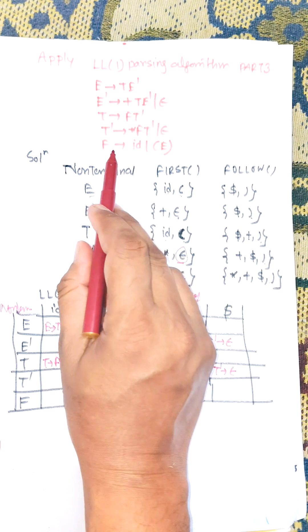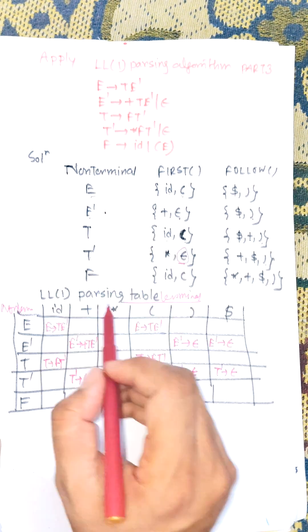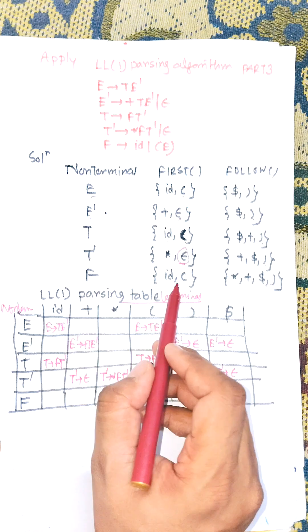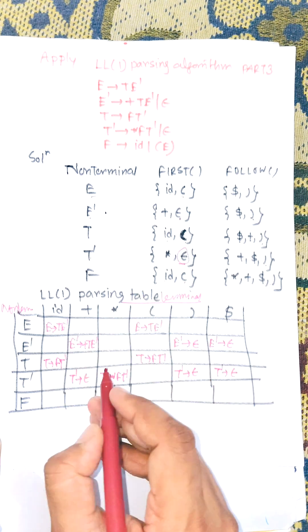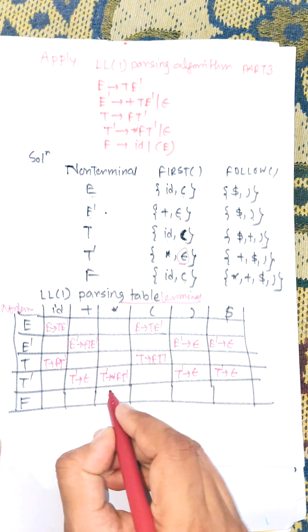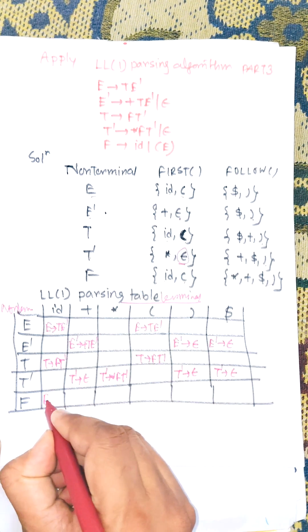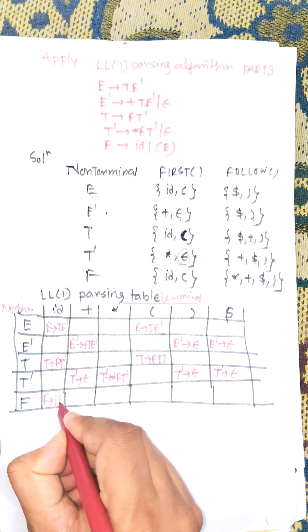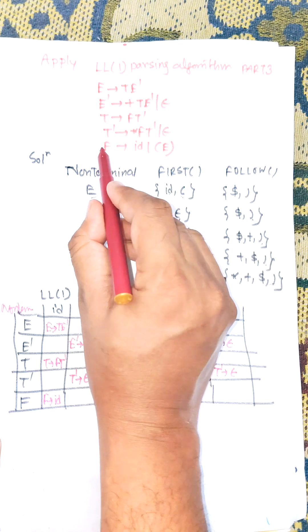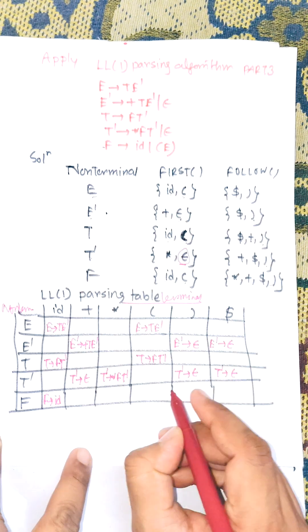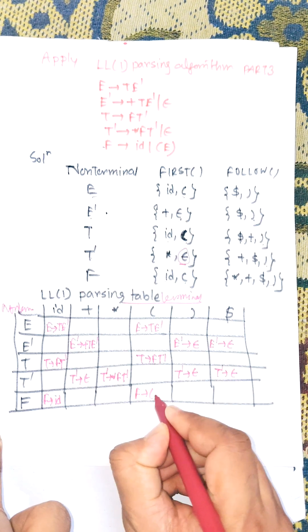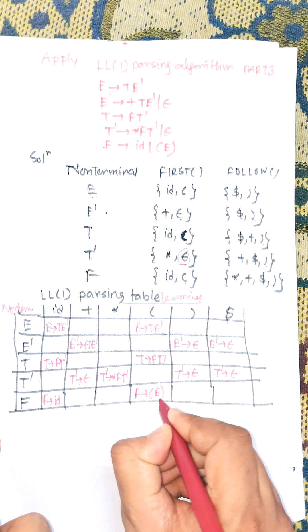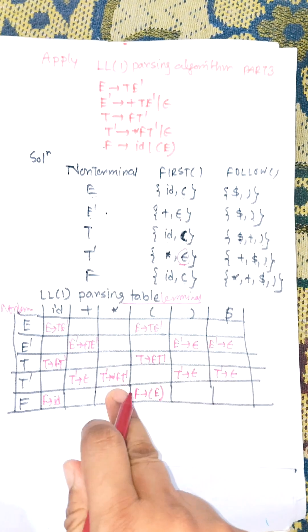The last non-terminal is F. FIRST(F) contains id and '('. So F → id is applied under id, and F → (E) is applied under '('. This completes the LL(1) parsing table.